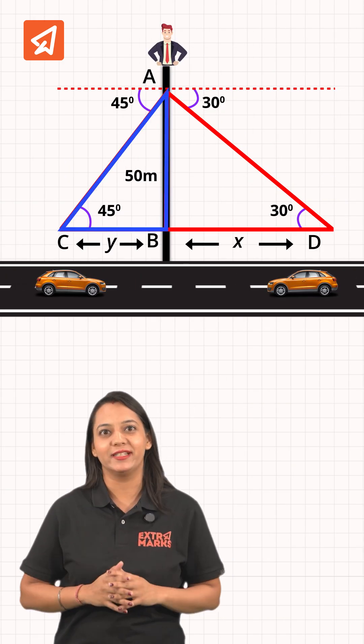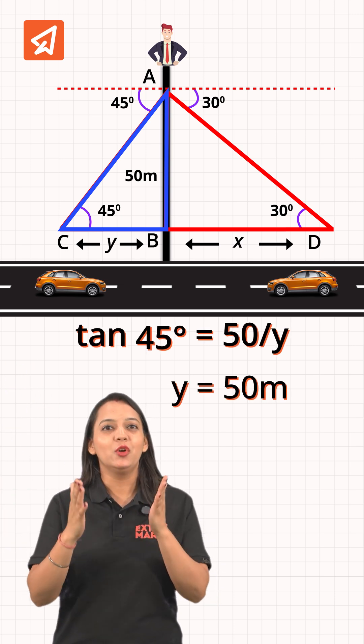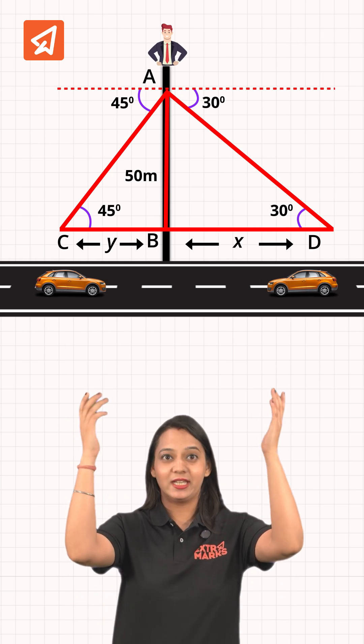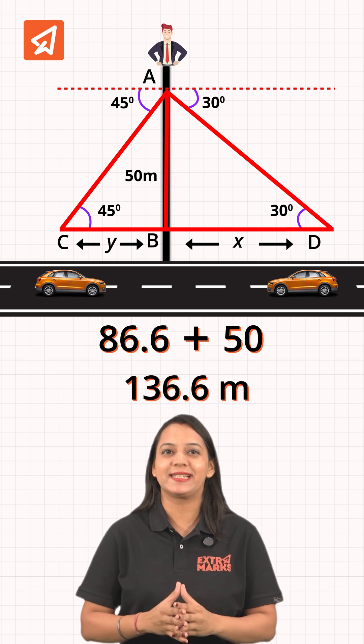Now, the second triangle. Tan 45 degrees equals 50 by y. So y equals 50 meters. The distance between the two cars is x plus y, which is 86.67 plus 50. So simple, right? That is 136.6 meters.